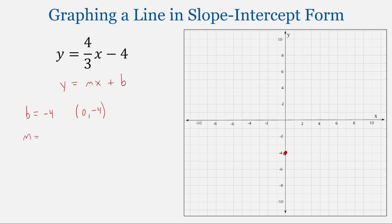Our slope is equal to 4/3 — a positive 4/3. This means we're going to go up 4 (our rise) and to the right 3 (our run). From our starting point, we go up 4 and to the right 3. From this new point, we repeat the process: up 4 and to the right 3.